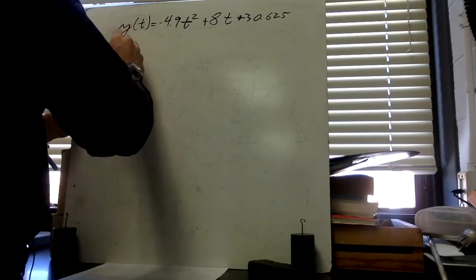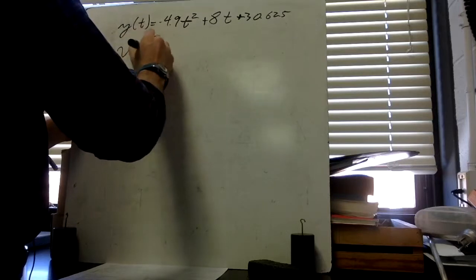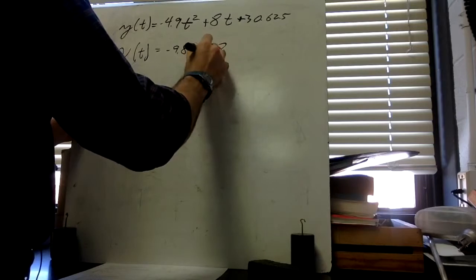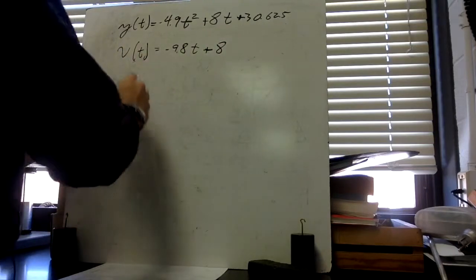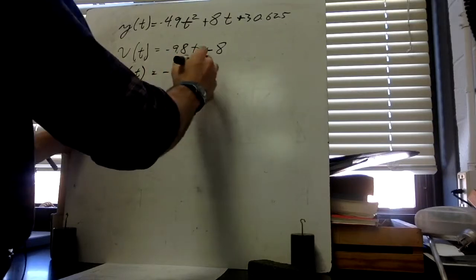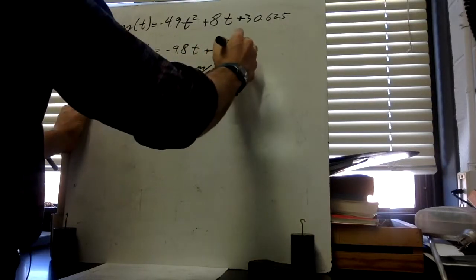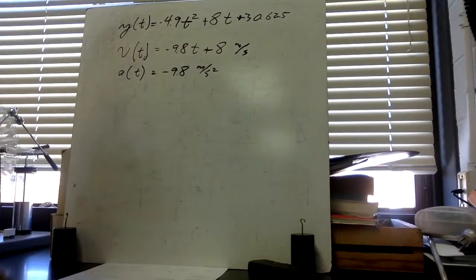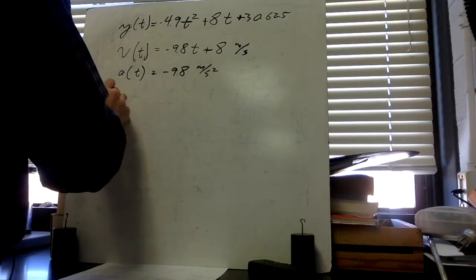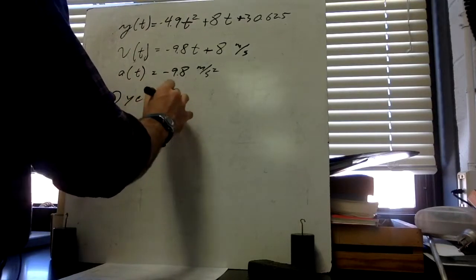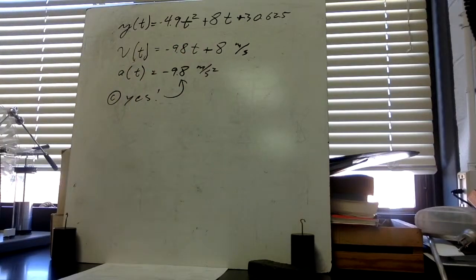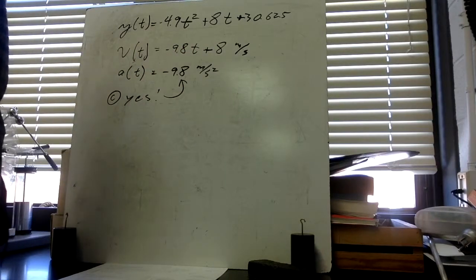So find the general expression for v(t). v(t) is -9.8t + 8. And then the general expression for a(t), like we just looked at, would just be -9.8. Part C: is the particle moving with constant acceleration? Justify your answer. The answer to C is yes. How do we know? That's why. Because the acceleration function is just a constant number.